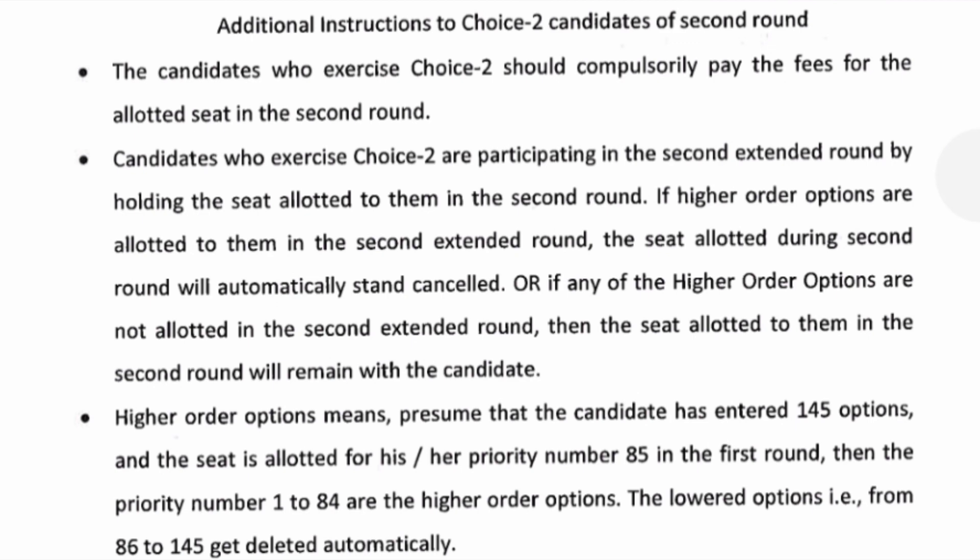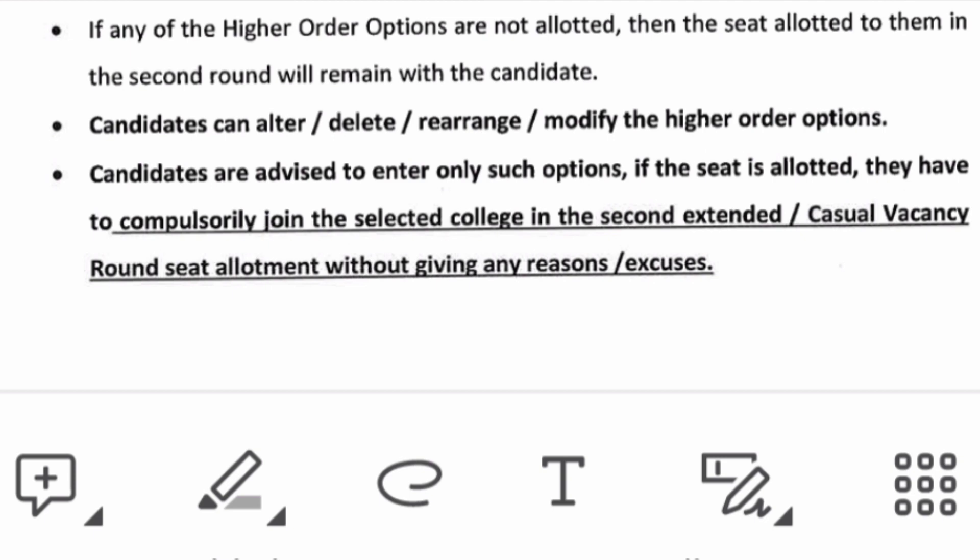Higher order options means: for example, if you have done 145 option entries and the seat allotted to you is priority number 85, then all seats from priority 86 onwards to 145 will be deleted. Only priorities 1 to 84 are called higher order options. You can only work with higher order options; the rest are automatically deleted by the system. You cannot add any new college or course — only the existing option entries from Round 2 will be taken into Round 3. You can only reorder and delete; candidates can alter, delete, and rearrange, but cannot add any new college.